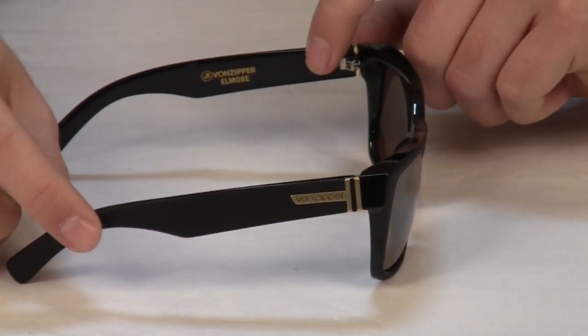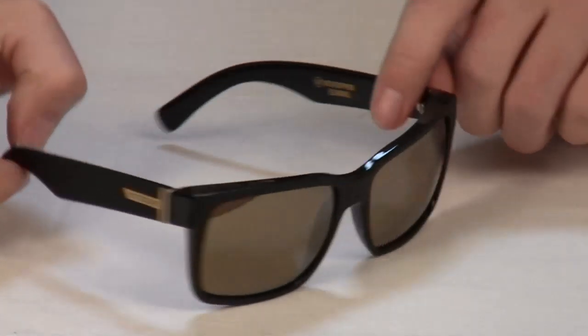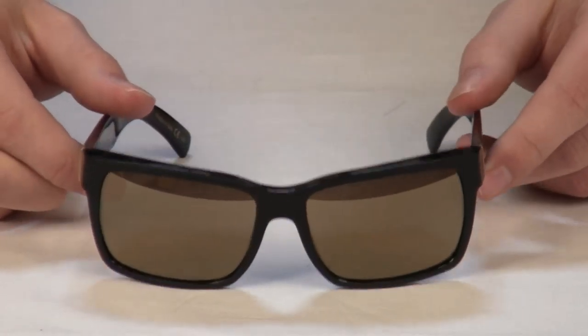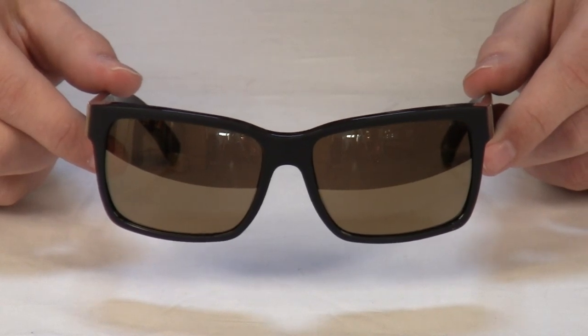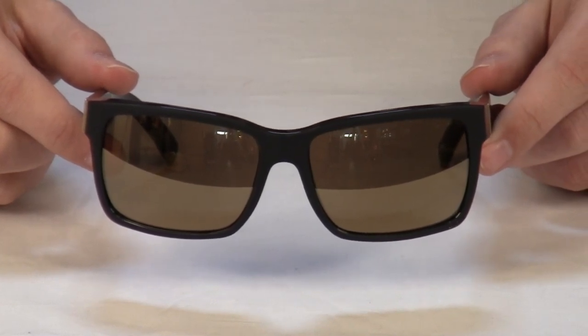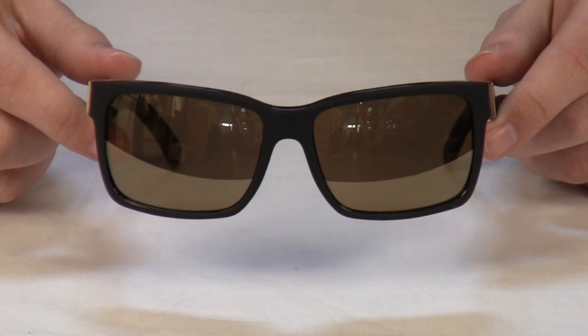They feature a stainless steel optical hinge, and as with all Von Zipper lenses, they provide 100% UVA, UVB, and UVC protection. They're distortion-free and optically correct.